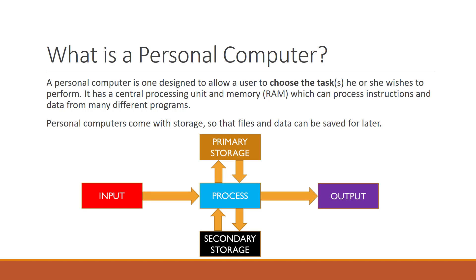The second type of computer is called a personal computer. A PC is designed to allow a user to choose the task or tasks he or she wishes to perform. It has a central processing unit which is not pre-programmed, and it has memory which holds the data to be processed and the data when it has been processed by the central processing unit. Personal computers also contain secondary storage which allows them to store data even after the computer has been switched off.